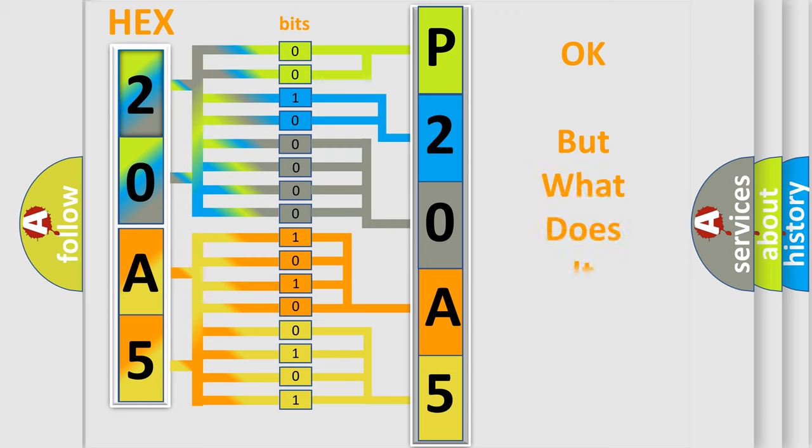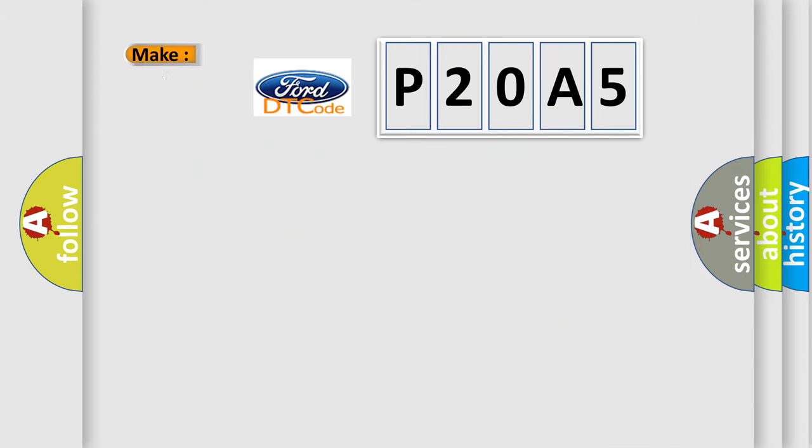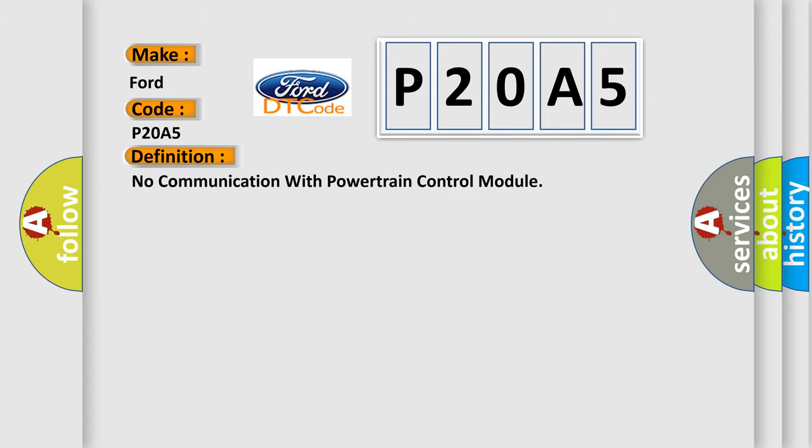We now know in what way the diagnostic tool translates the received information into a more comprehensible format. The number itself does not make sense to us if we cannot assign information about what it actually expresses. So, what does the diagnostic trouble code P20A5 interpret specifically for Infinity car manufacturers?